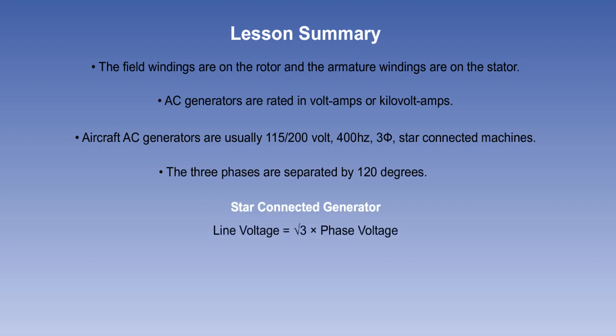In a star-connected generator, the line voltage is equal to root 3 or 1.73 times the phase voltage. The line current is the same as the phase current.